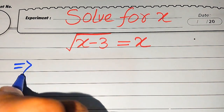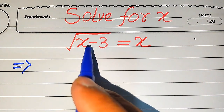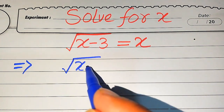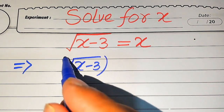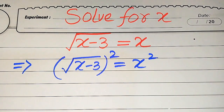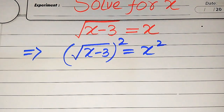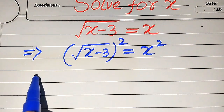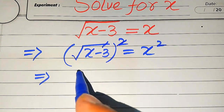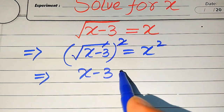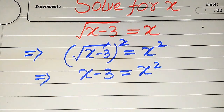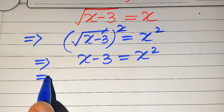The very first thing we need to do is remove the square root sign from the left hand side. In order to remove the square root sign, we need to square both sides. When we square both sides, the square and square root cancel, and we get X minus 3 equals X squared.